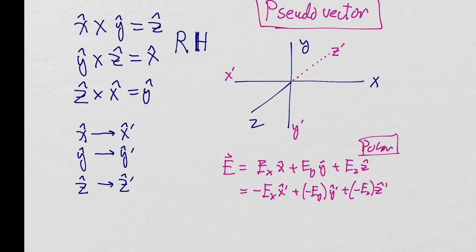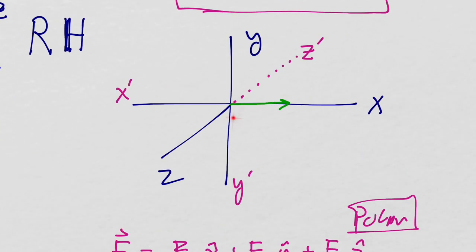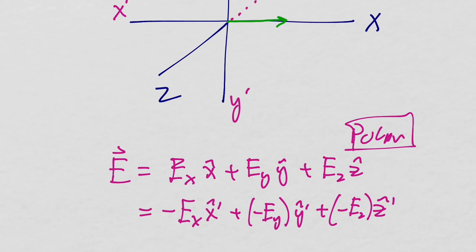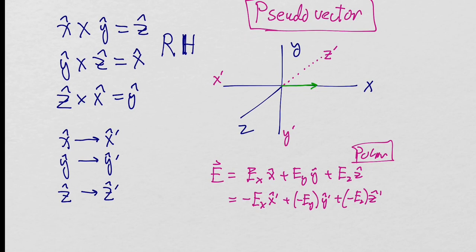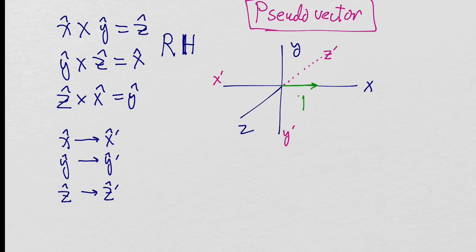That ensures E will always be pointing in the correct direction — in the unprimed system these are positive component values, and in the prime system they are negative component values. Now let's consider the magnetic field, which is going to be a pseudo-vector and won't behave this way. We begin by considering a current flowing in the positive-X direction of the unprimed system. This current flowing in the positive-X direction is going to produce a magnetic field. Using the right-hand rule of the unprimed system, the magnetic field is going to come out of the board.